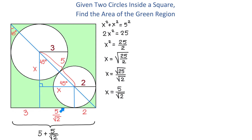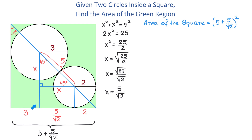If this side is 5 plus 5 over square root of 2, then the opposite side is also 5 plus 5 over square root of 2. To find the area of the square, we raise 5 plus 5 over square root of 2 to the second power. We multiply one side by another side, and because these two sides are the same, the area equals (5 plus 5 over square root of 2) squared.